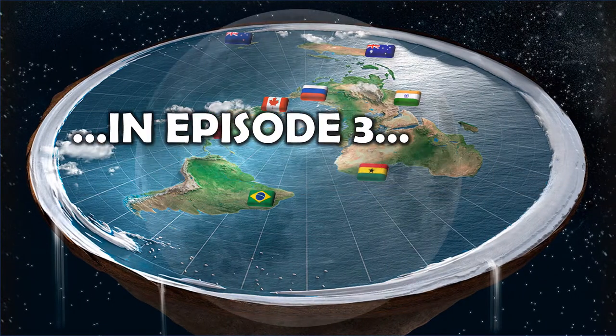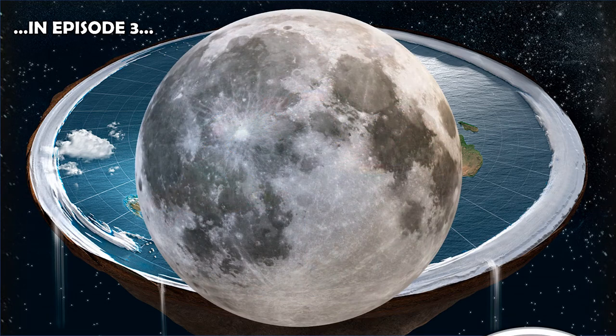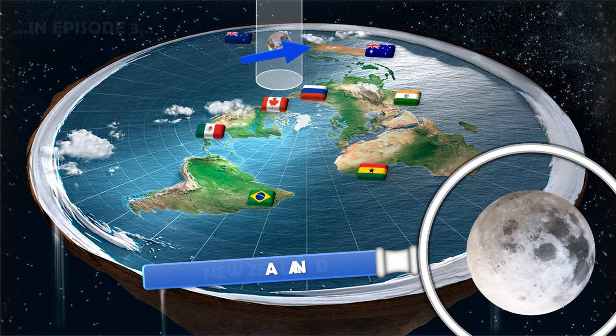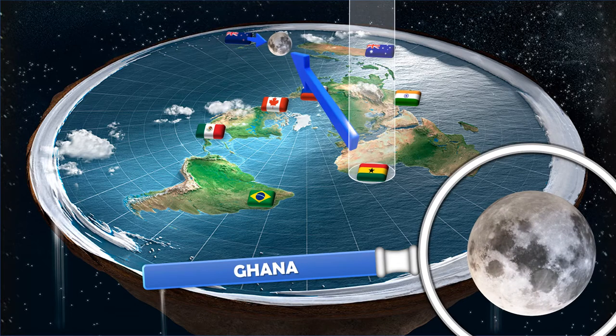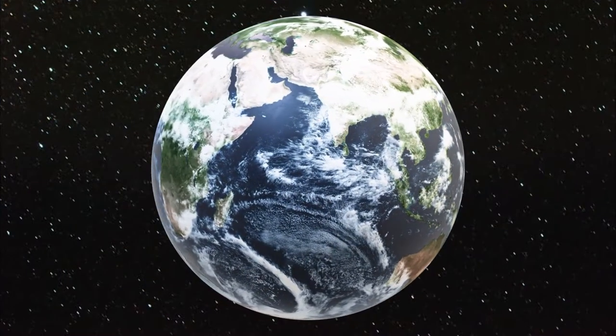Episode 3 saw us exploring the Moon and how we can only ever seem to see a single face of the Moon, something that wouldn't be expected on a flat Earth but would be expected on a round one in synchronous orbit with Earth.